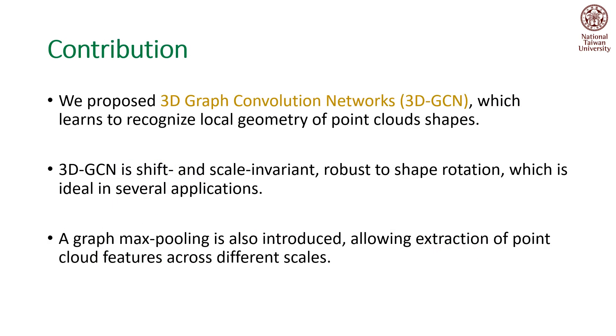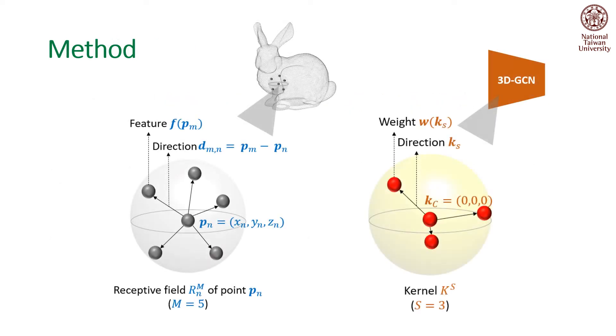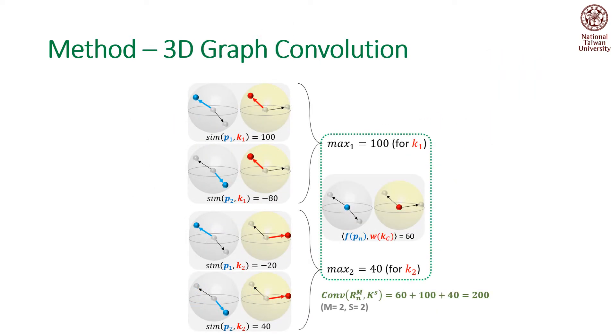In this work, we propose 3D graph convolution networks. We define receptive fields to represent local structure of point clouds and also kernels in our model. We define graph convolution operation to extract features from point clouds.